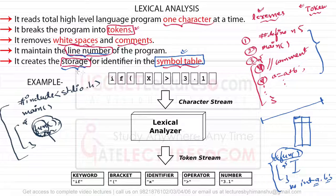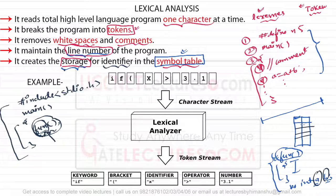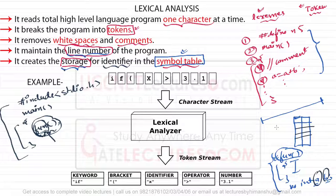So the responsibility of the lexical analyzer is to create storage for identifiers in the symbol table. If you have identifiers like a and b, it is going to create storage where we will store the actual information about them. Don't worry if some statements seem contradictory — I'll explain everything line by line.